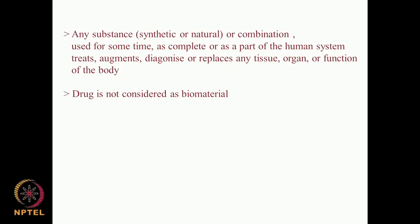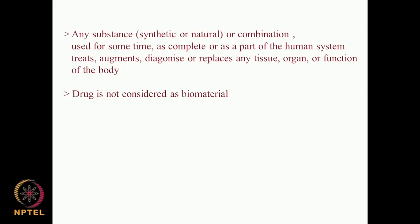What is a biomaterial? Any substance — it could be a synthetic substance, a natural substance, or a combination of these two — used for some time as complete or as a part in the human system. The idea could be for treating some problem in the human system, enhancing the function of something, it could be diagnostic, or it could be replacing any tissue, organ, or function — that is called a biomaterial.